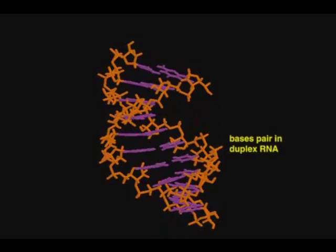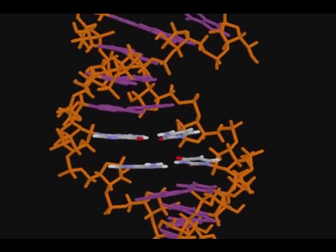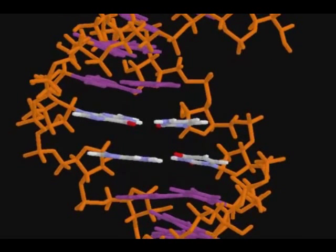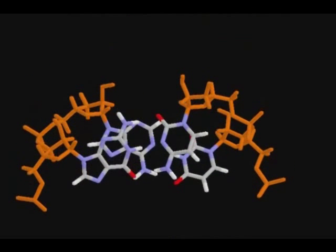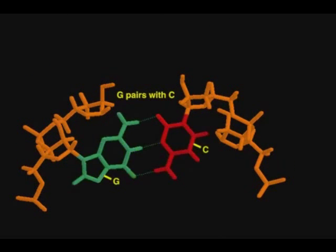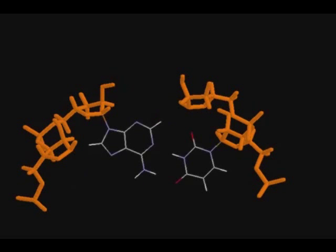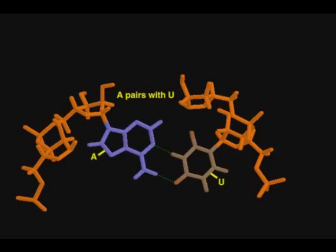Base pairing between strands is similar to that in DNA, except that adenine pairs with uracil instead of with thymine. Uracil is never used in DNA. As in DNA, a GC base pair in an RNA helix has three hydrogen bonds. The AU pair, like the AT pair, has two hydrogen bonds.